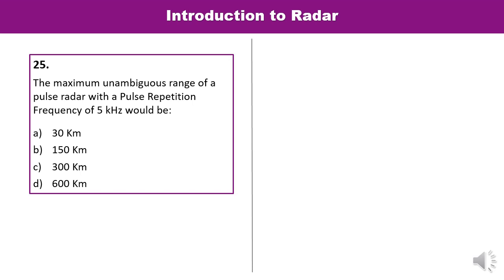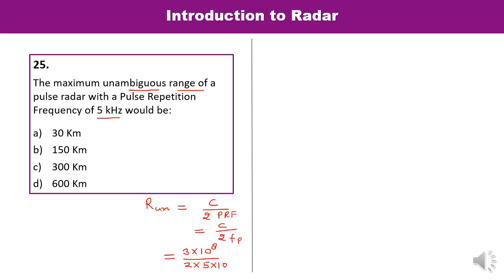Question 25: The maximum unambiguous range of a pulse radar with a PRF of 5 kHz. The formula is: R_unambiguous = C / (2 × PRF). With C = 3 × 10⁸ m/s and PRF = 5 × 10³ Hz, simplifying gives 30 kilometers. So A is the correct answer.